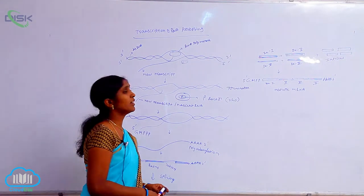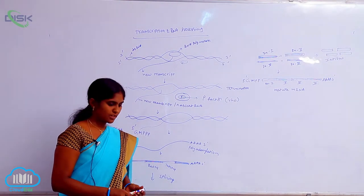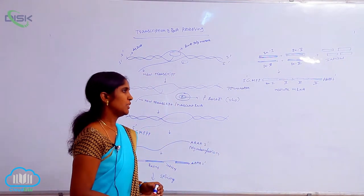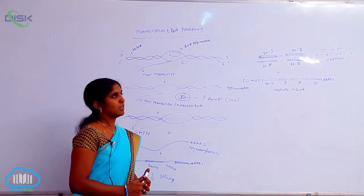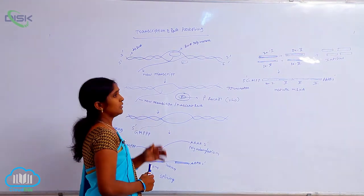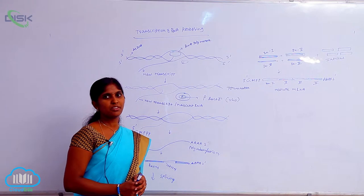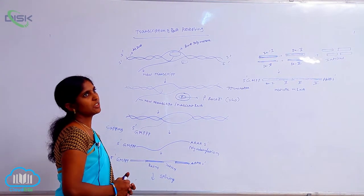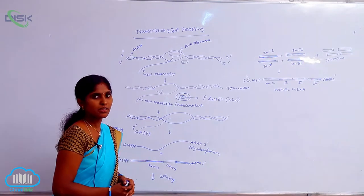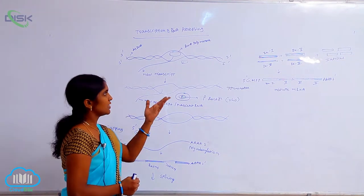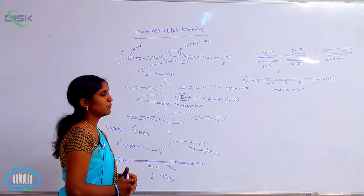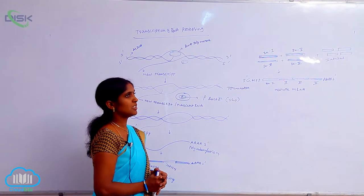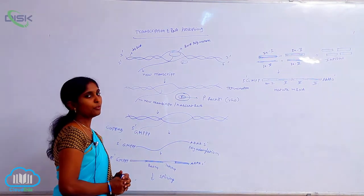This covers transcription as well as RNA processing. During transcription, mRNA is synthesized from DNA. On the transcriptional unit, the promoter region, structural genes, and terminator region are present. The initiation of transcription is enabled by the sigma factor, elongation is continued by the core enzyme of RNA polymerase, and termination is done by the rho factor.